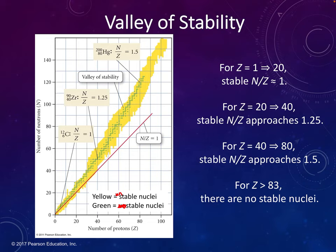When we have really low atomic numbers, like 1 to 20 — hydrogen to calcium — we want our neutron-to-proton ratio to be about one-to-one. For example, carbon-12 has six protons and six neutrons: a one-to-one ratio, which is stable. When we get a little bigger, we want the ratio closer to 1.25. As we get bigger still, closer to 1.5. And once we're above atomic number 83, pretty much everything is unstable and undergoing some form of decay — there are no more stable nuclei at that point, so everything is radioactive.